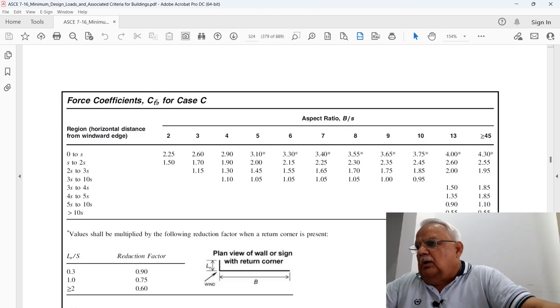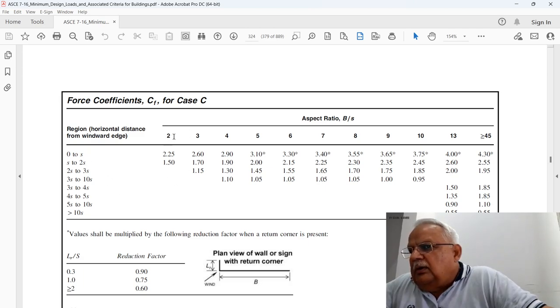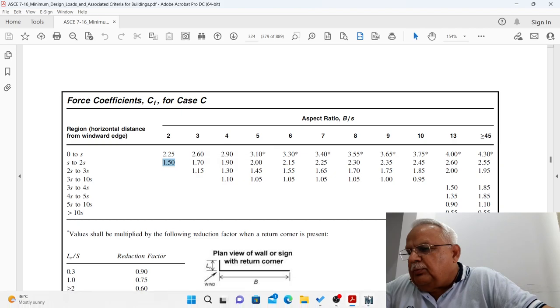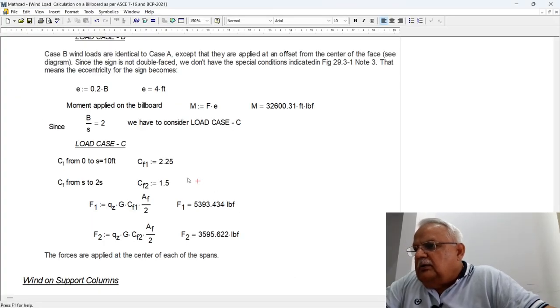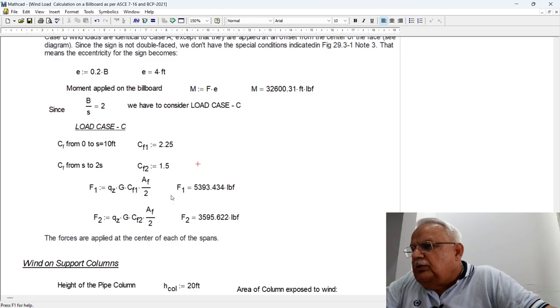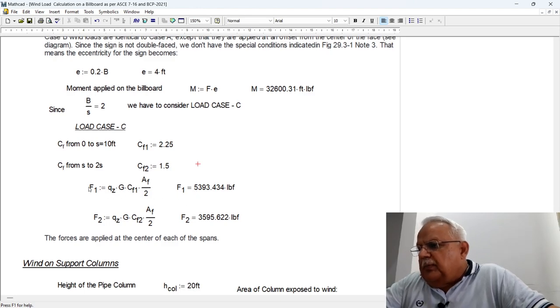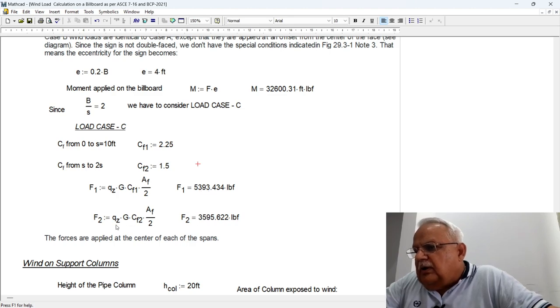Force coefficient Cf for case C, where the aspect ratio B over S is 2 for our case. So 0 to S, which is 0 to 10, is 2.25. Then S to 2S, this is 1.5. Going back to our calculation, we know that the coefficients are 2.25 and S to 2S is 1.5.